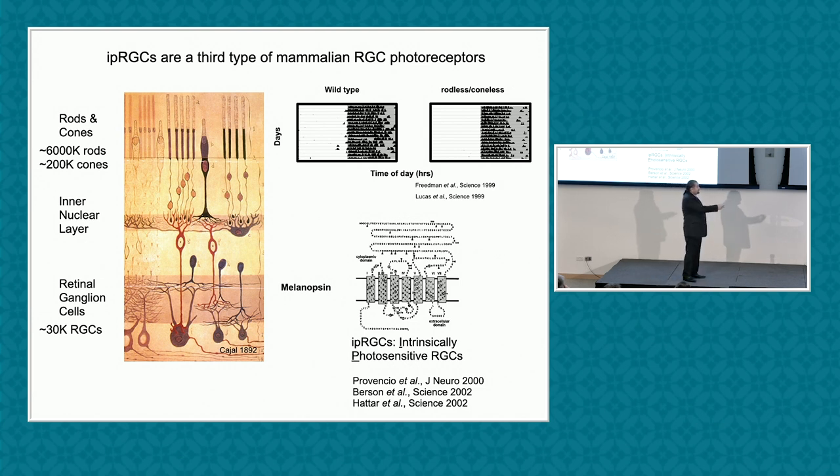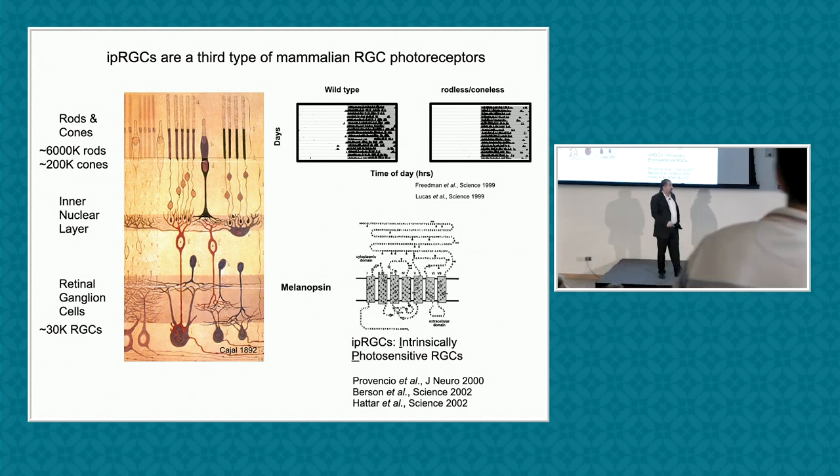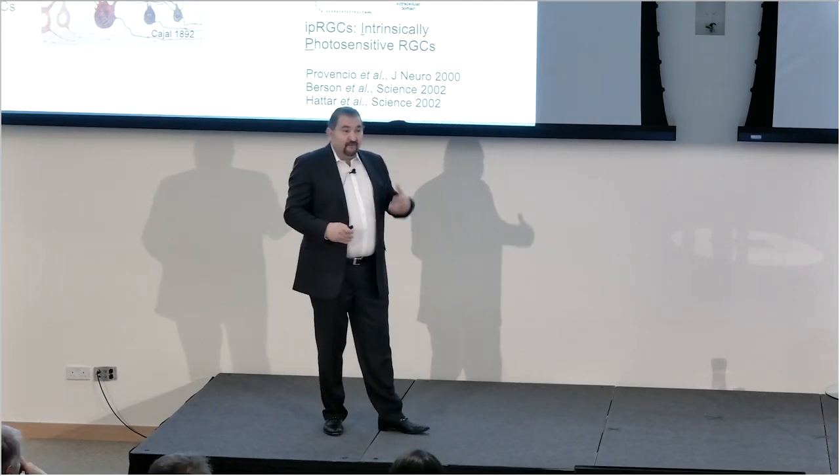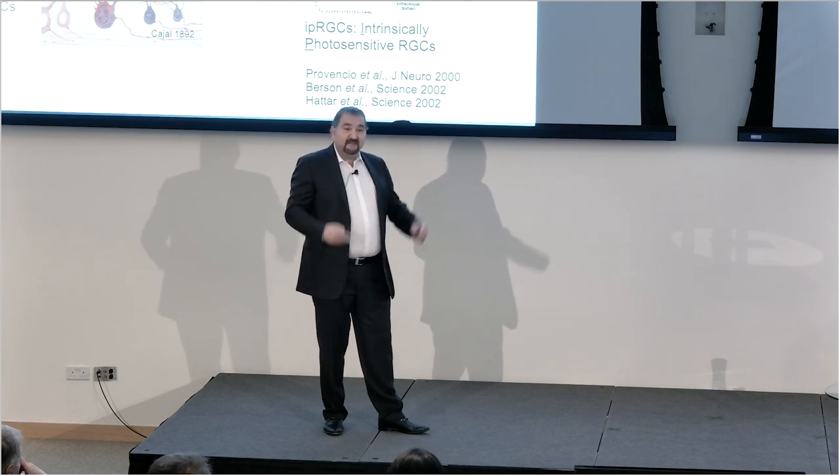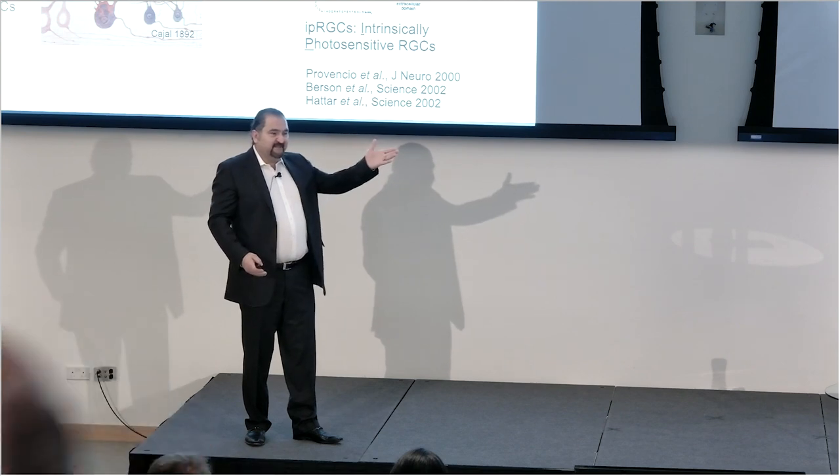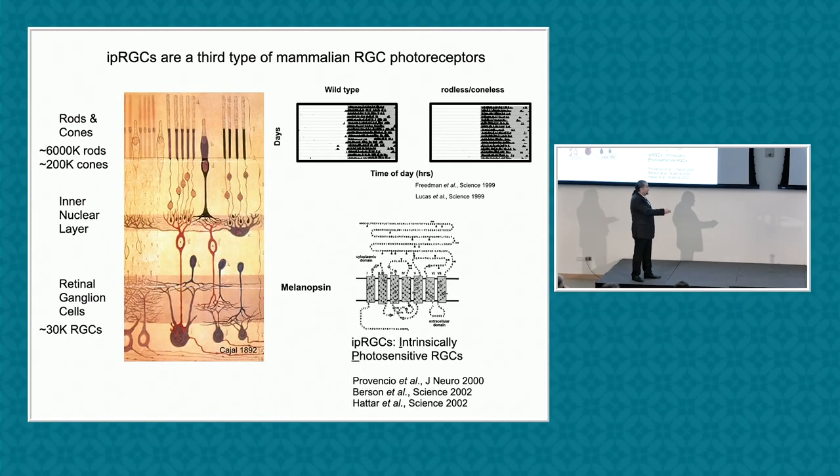People assumed for photoentrainment it has to be either rods which allow you to see in dim light conditions or cones which allow you to see in color. Here's where the whole field went crazy. In 1999, two Science papers from Russell Foster's lab found that animals that completely lack rods and cones, and hence are called rodless, coneless animals, are image blind but are completely capable of entraining to the light-dark cycle. This was shocking. Not only were they entraining to the light-dark cycle, they were entraining with the same sensitivity as control animals. They came up with the idea that there may be other photoreceptors in the retina that are non-rod, non-cone photoreceptors, and people laughed at them honestly. People would go to their poster and say this is crazy, you're missing something.